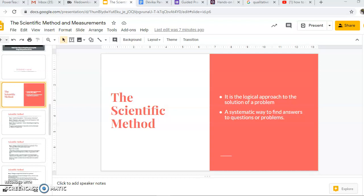So what is the scientific method? It is the logical approach that we take to finding solutions to a problem. It is the most systematic way to find answers to questions we have or problems we are facing. And it is systematic because in the world of experimentation or in the world of science...